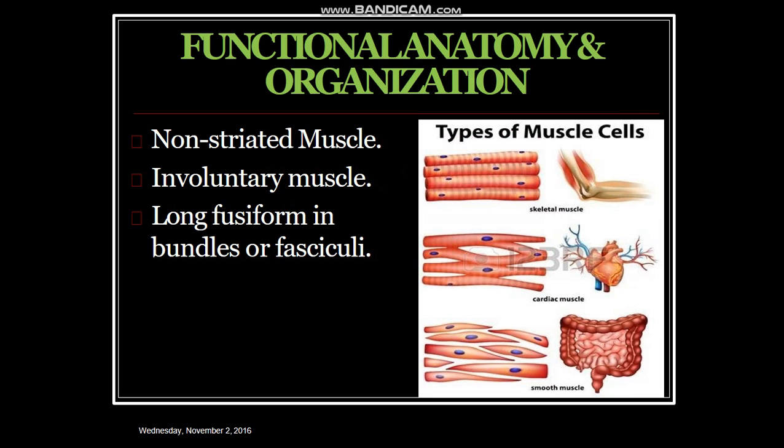Functional organization and anatomy: you are looking here at the types of muscle shown — the skeletal muscle, the cardiac muscle, and the smooth muscle. We have three types: non-striated muscle, involuntary muscle, long fusiform, arranged in bundles or fasciculi.